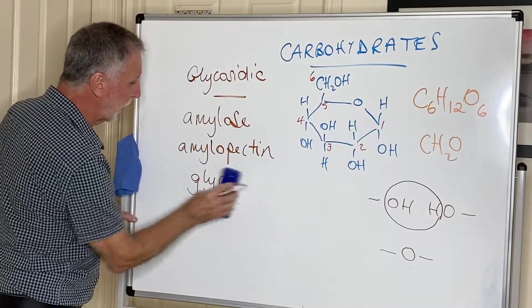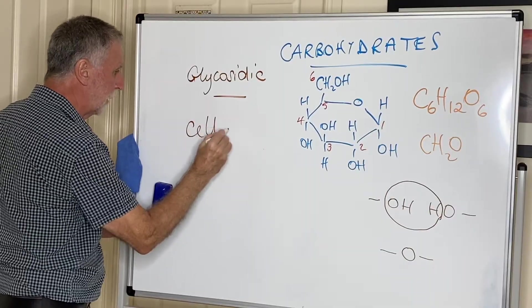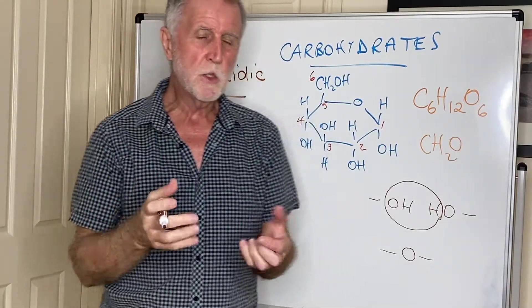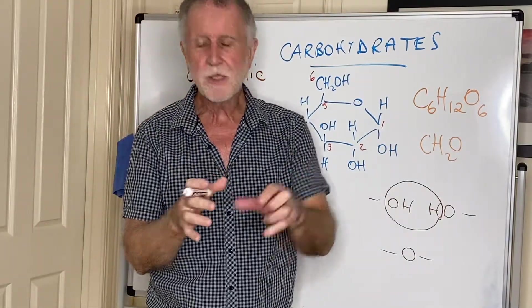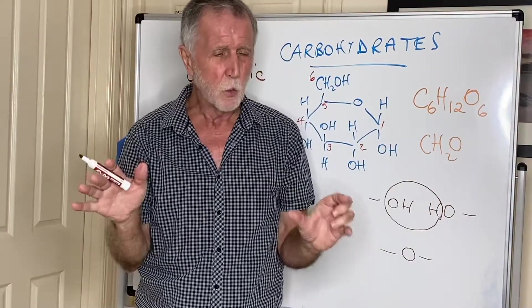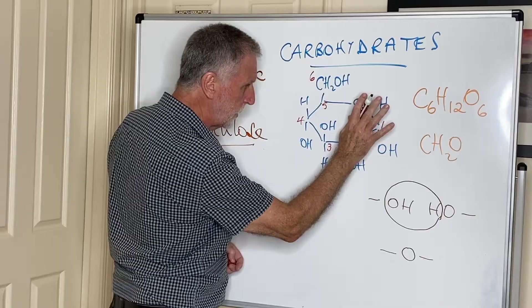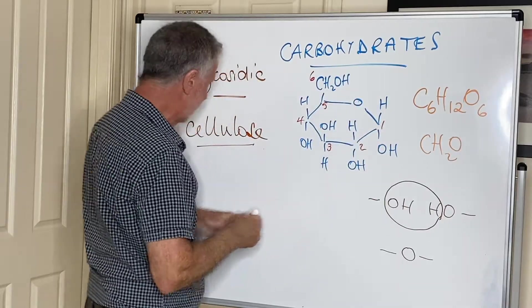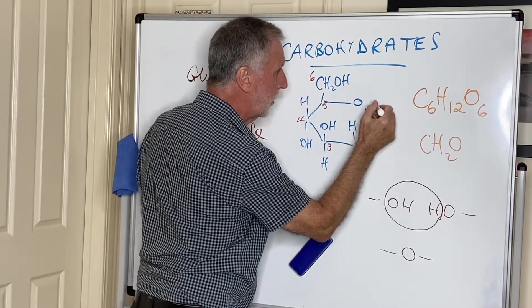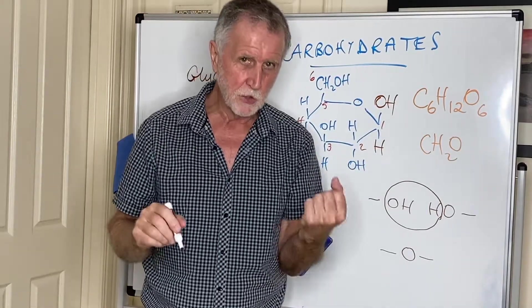There's one final carbohydrate you need to know about, and that is cellulose. Now cellulose is a different ballgame. Cellulose is not used for food, this is used for structure. The stems of plants, for example, will contain cellulose. It's much more rigid, it's completely water insoluble. And cellulose is no longer using alpha glucose. Instead, what it does is change those around. And cellulose has the OH there and the H there. We have now got beta glucose.